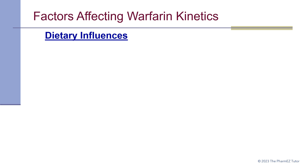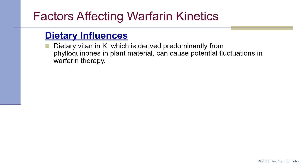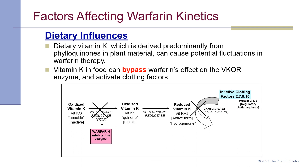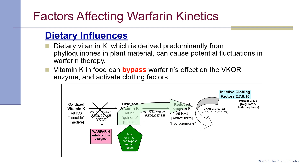Regarding dietary influences: dietary vitamin K, derived predominantly from phylloquinones in plant material, can cause potential fluctuations in warfarin therapy. Vitamin K in food can bypass warfarin's effect on the VKOR enzyme and activate clotting factors. By administering food or vitamin K1, this can bypass the warfarin effect — the carboxylase then converts the inactive clotting factors to the carboxylated active clotting factors, thus bypassing warfarin's effect.